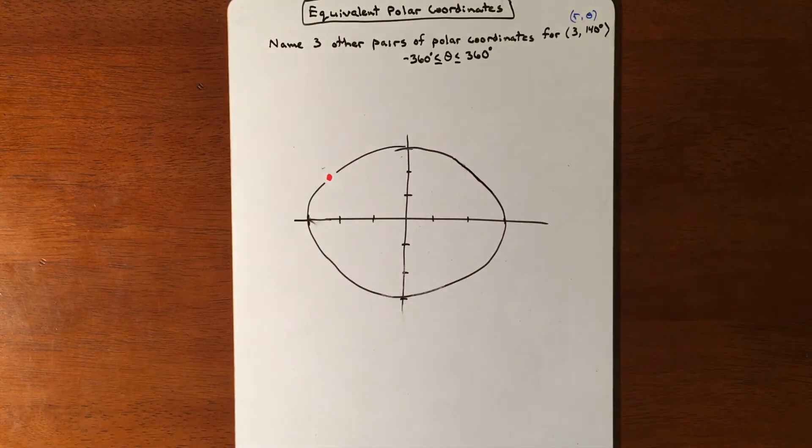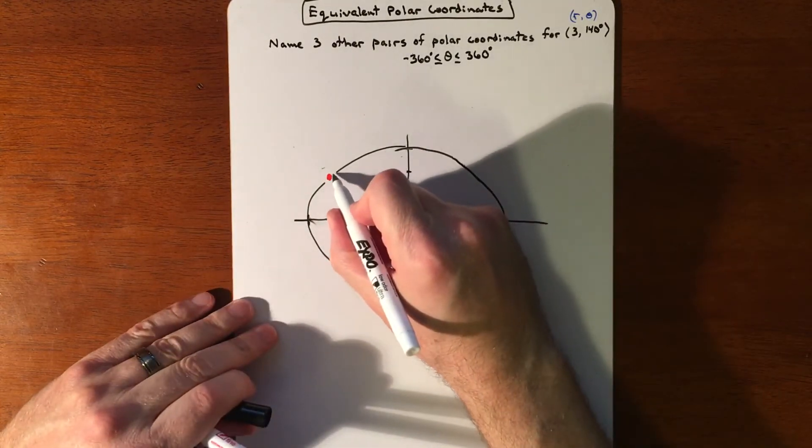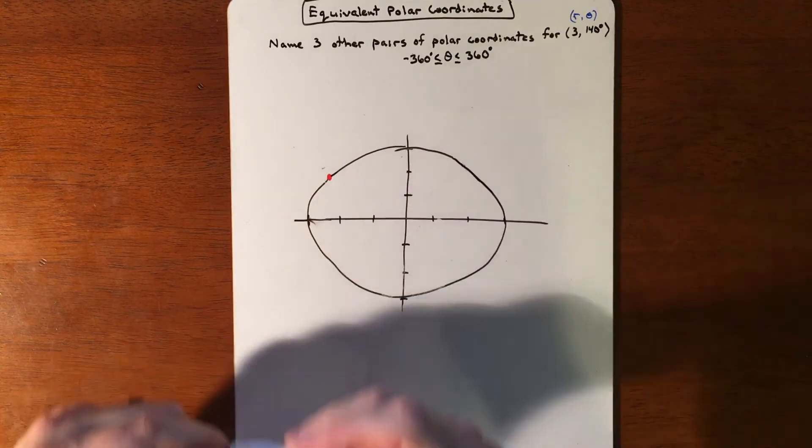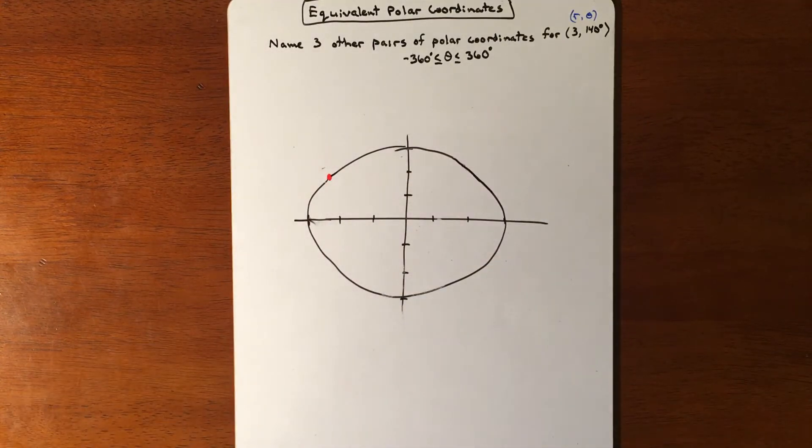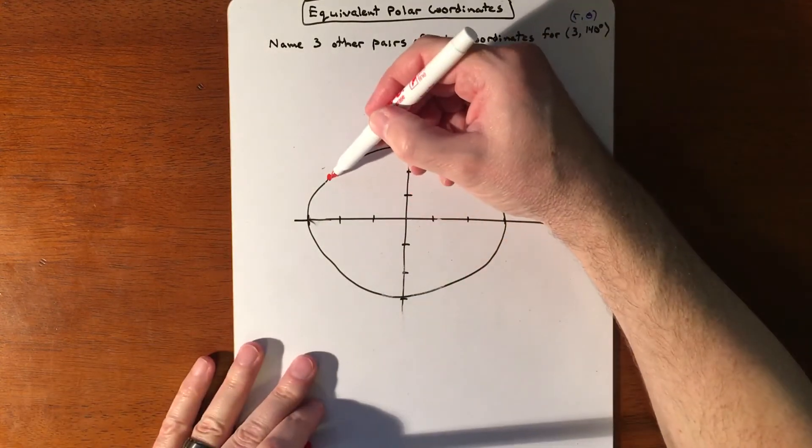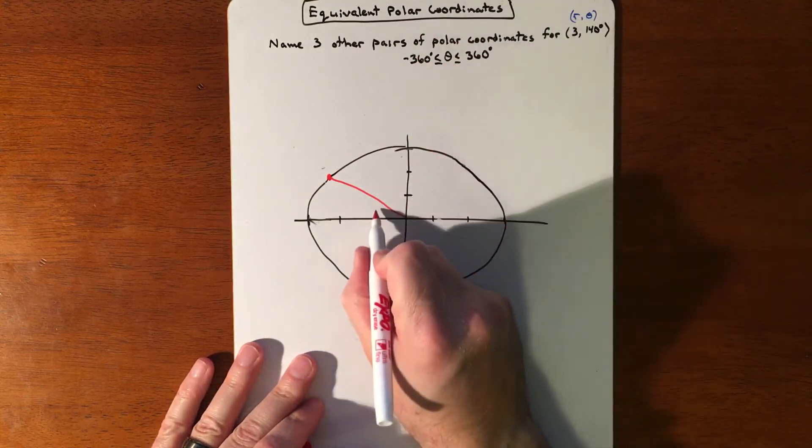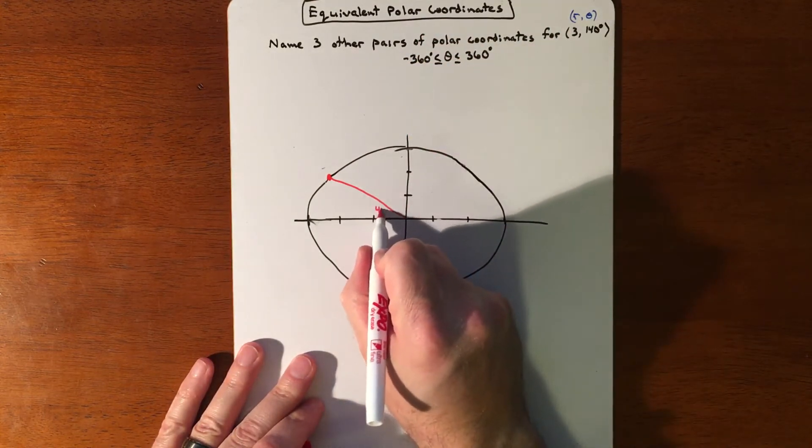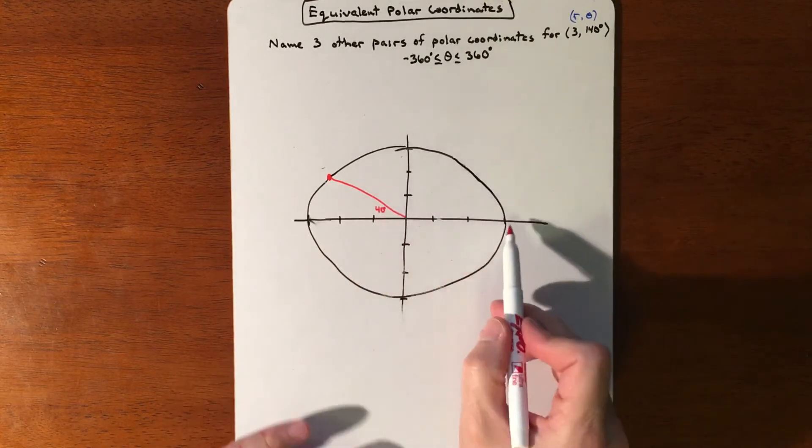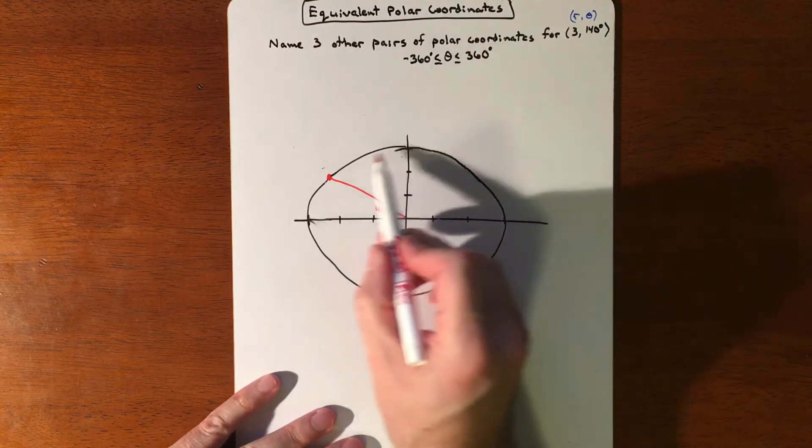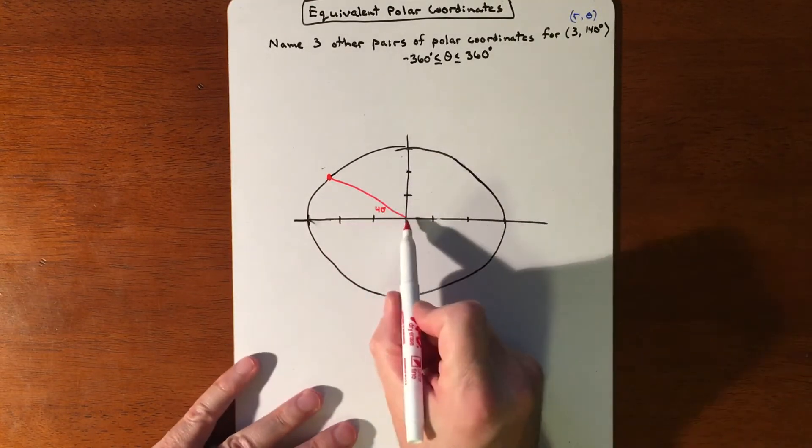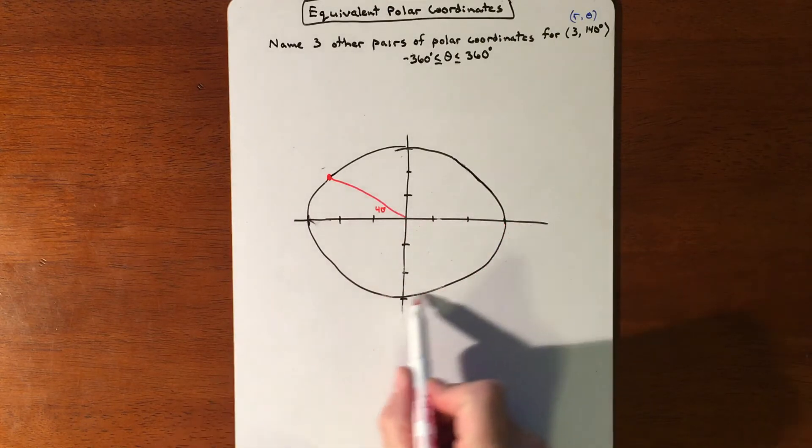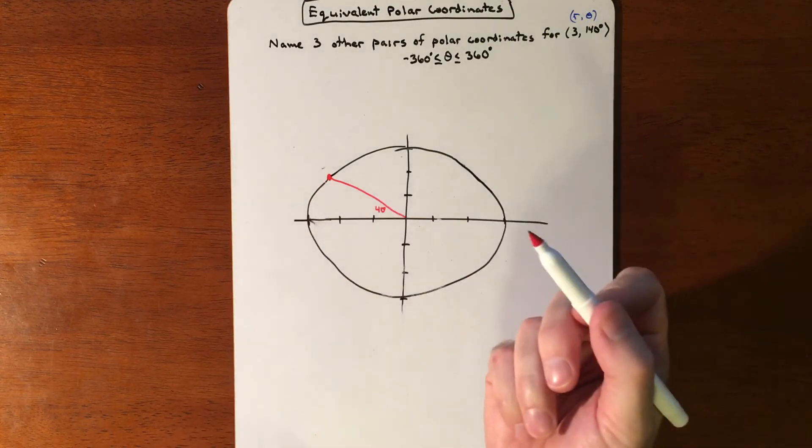So our point is somewhere around there. Types of information that I need in order to make this point is, let's throw in a reference angle. So the reference angle is 40. To get there, I could go out 3, go 140 degrees. But I could also go out 3 and go backwards to get there. There's nothing wrong with that at all. It would get us in the exact same location.